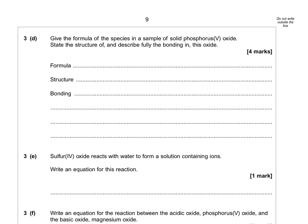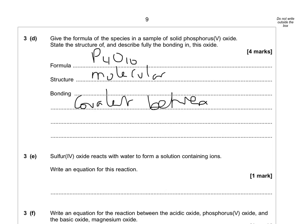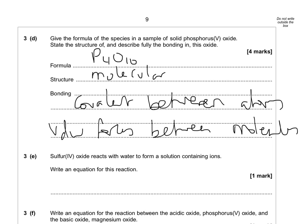Give the formula of the species in a sample of solid phosphorus(V) oxide, and state the structure and describe fully the bonding. The formula is P₄O₁₀, and the structure is molecular, or simple molecular — it exists as individual molecules. The bonding is covalent between atoms, so what holds the P's and O's together is covalent bonds. But there are van der Waals forces between molecules, so what you actually have to break to boil or melt this is van der Waals forces.